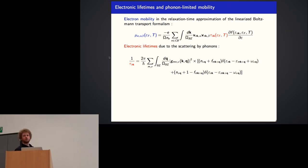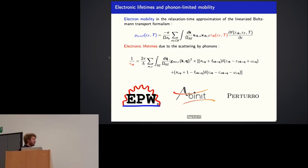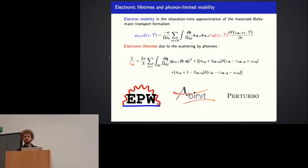We have the electron-phonon coupling matrix elements G, and we also have to take into account energy conservation for the absorption and emission of a phonon. There are different software packages available to compute these lifetimes. The main one for now is probably EPW, which uses Wannier functions to interpolate these matrix elements because this integration converges slowly with the number of Q points. EPW uses Wannier functions to interpolate the matrix elements on very dense Q point grids to reach a converged value for the lifetimes.